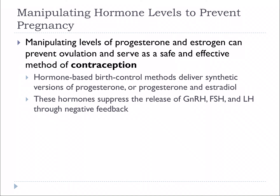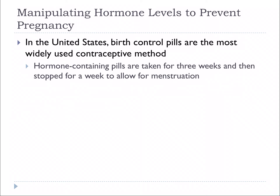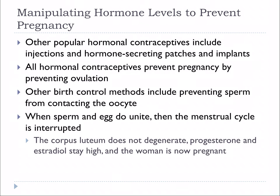You can look at levels of progesterone and estrogen to figure out where females are in the cycle, and that can be a way of preventing pregnancy — contraception. Hormone-based birth control delivers synthetic versions of progesterone, or progesterone and estradiol. These hormones suppress the release of GnRH, FSH, and LH through negative feedback and therefore prevent ovulation. The most common method is contraceptive pills, taken for three weeks and then stopped for a week to allow for menstruation. There are other ways to get the hormones — patches, implants, rings.